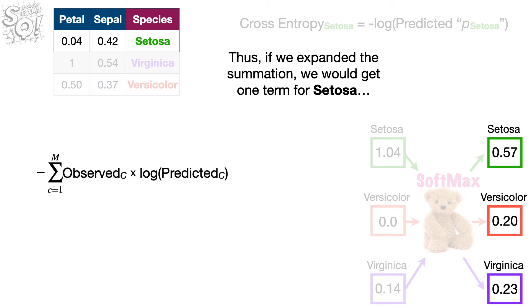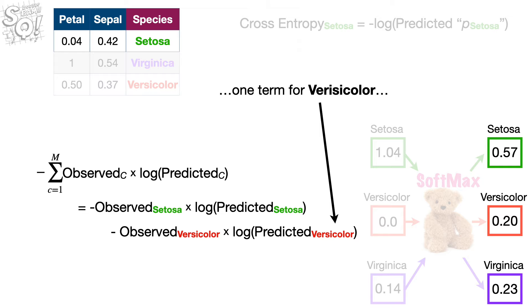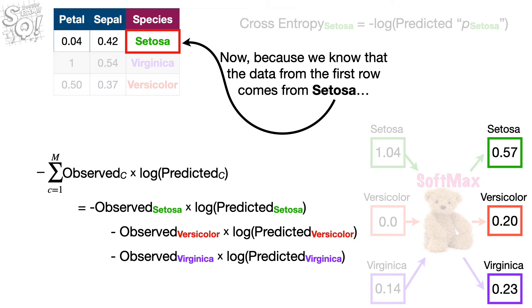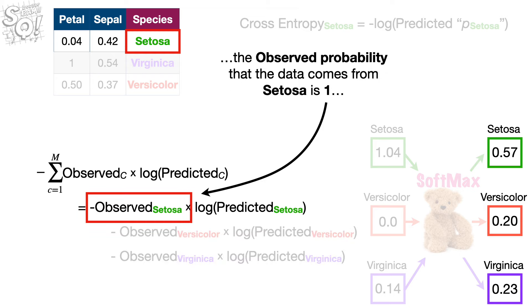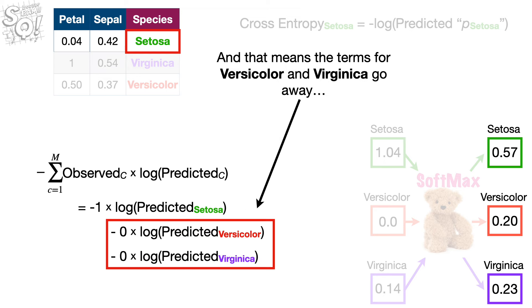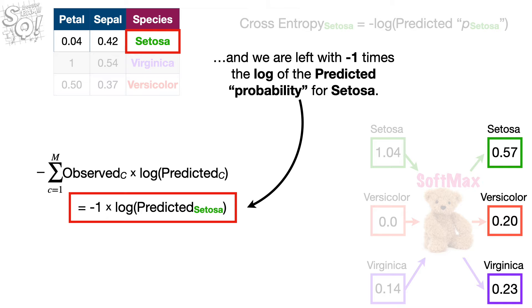Thus, if we expanded the summation, we would get one term for Setosa, one term for Versicolor, and one term for Virginica. Now, because we know that the data from the first row comes from Setosa, the observed probability that the data comes from Setosa is 1, and the observed probabilities that the data came from Versicolor and Virginica are both 0. And that means the terms for Versicolor and Virginica go away. And we are left with negative 1 times the log of the predicted probability for Setosa.